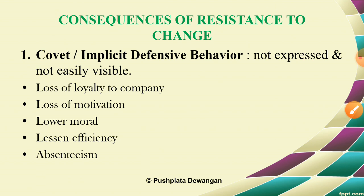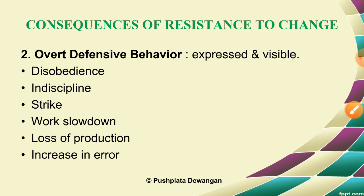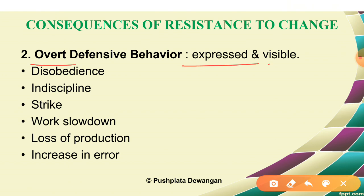The consequences of resistance to change fall into two categories. First, covert or implicit defensive behavior — behaviors that are hidden and not easily visible — includes loss of loyalty to the company, loss of motivation, lower morale, reduced efficiency, and absenteeism. Second, overt defensive behavior — behaviors actively expressed and visible — includes employee disobedience or indiscipline at the workplace, strikes or lockdowns, work slowdown, loss of production, and an increase in errors.